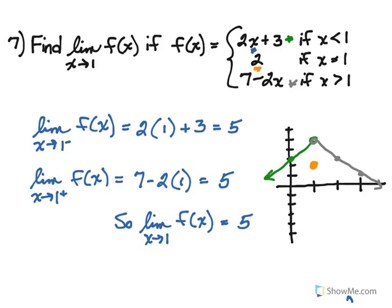You can see that as you approach one from the left and the right, you're approaching the location of that hole, which happens to be at five. The middle piece places a point at one comma two — it's almost there to throw you off, if you want to think of it that way. So don't be fooled by it.